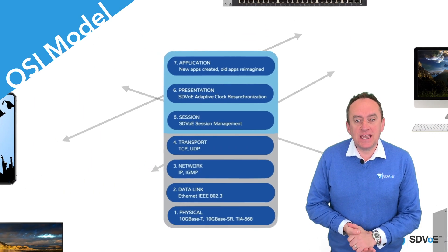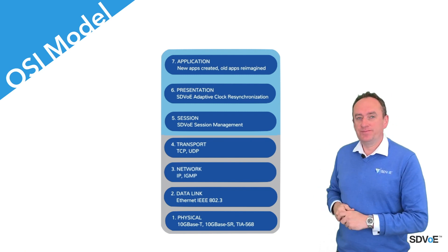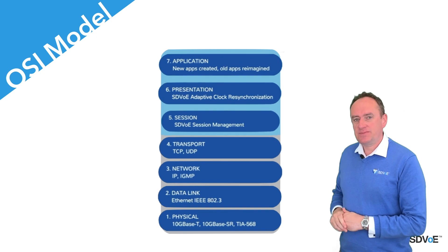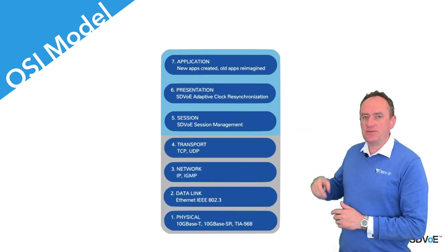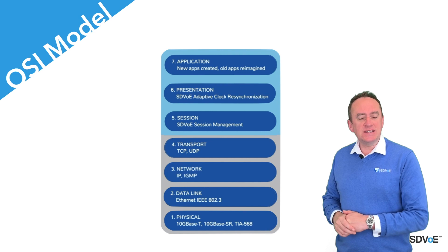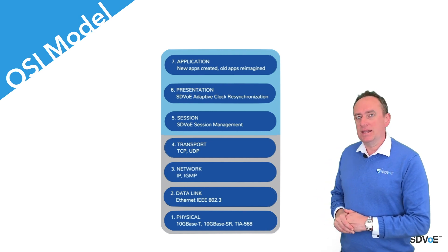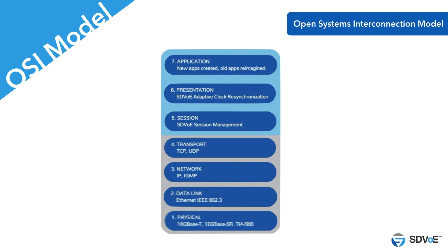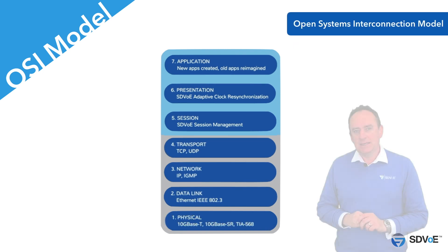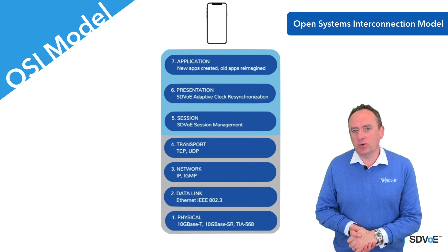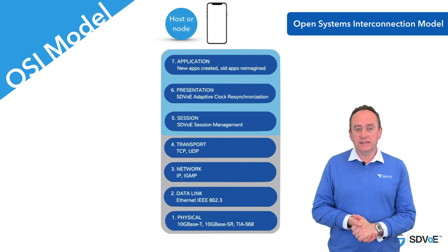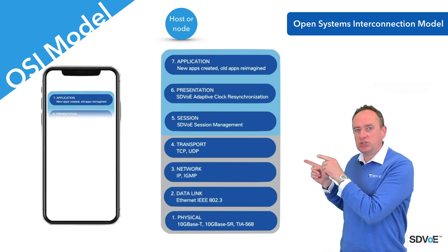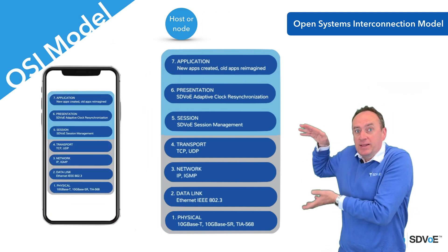Let's begin by taking a closer look at the OSI model. The first thing you'll see is that it's made up of seven layers — layer 1 at the bottom and layer 7 at the top. Each of these layers has a name. They represent the abstract model of networking called the Open Systems Interconnection model. Any device which connects to a network is called a host or a node, and for the purpose of this course, I want you to imagine that each host has an OSI built into it.